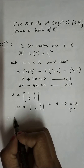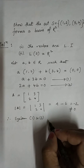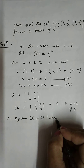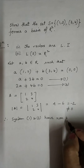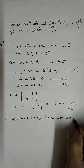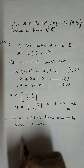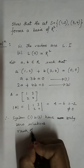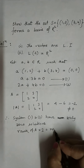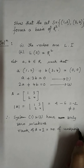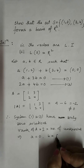Therefore, the system of equations 1 and 2 has only the zero solution, because the rank of A equals 2, which equals the number of unknowns. This implies a = 0 and b = 0.